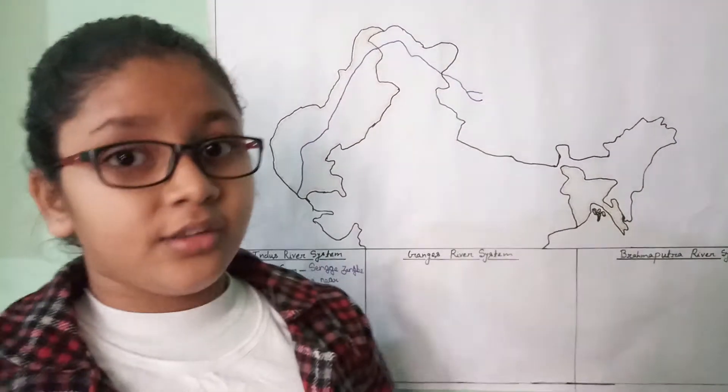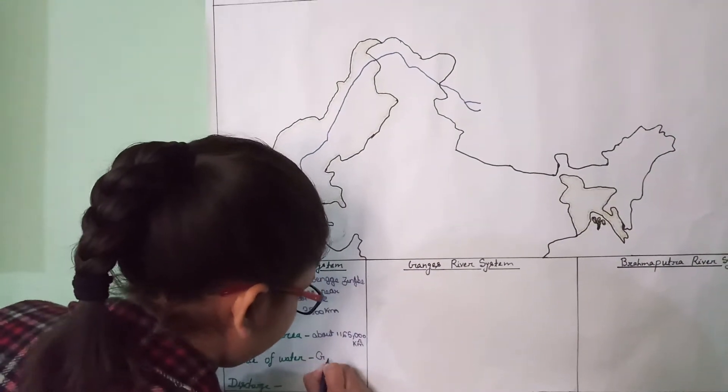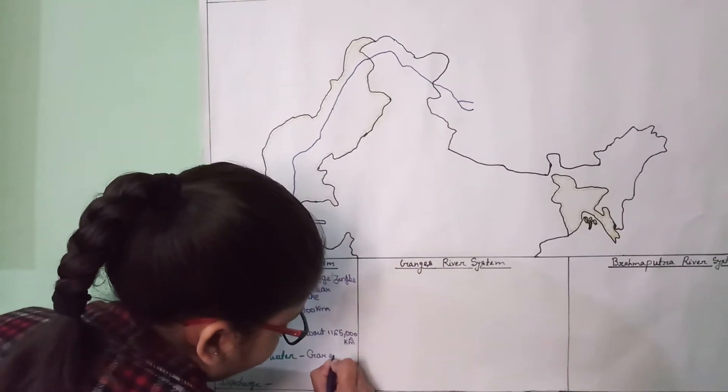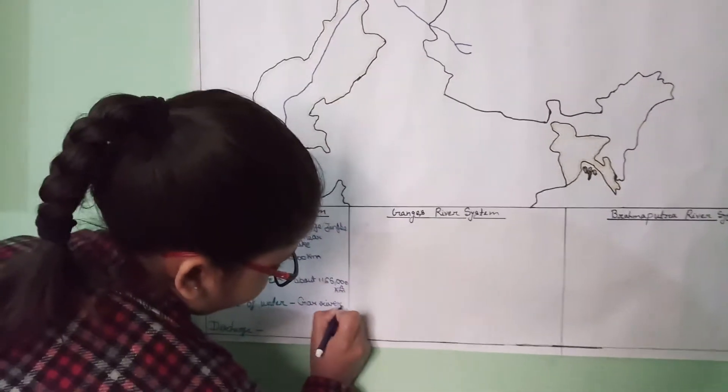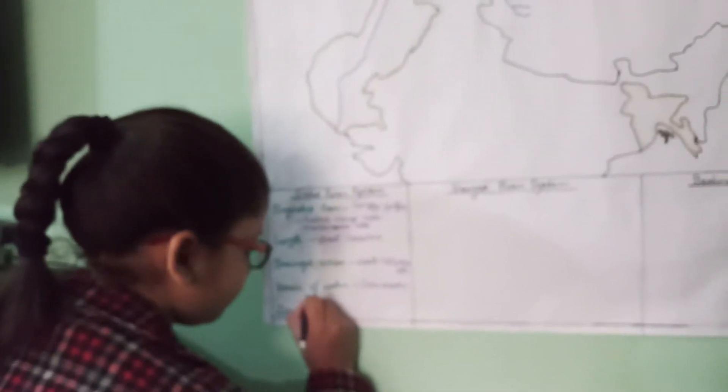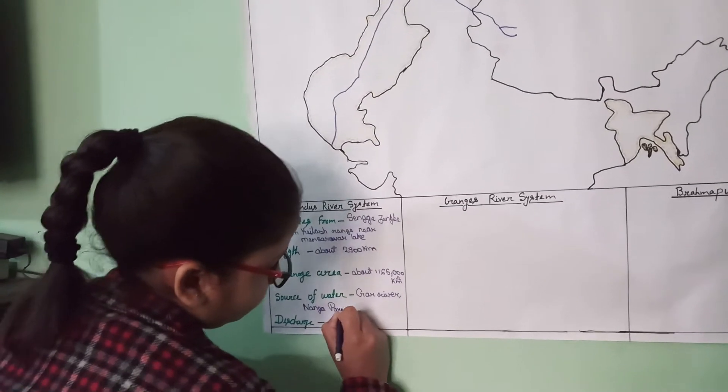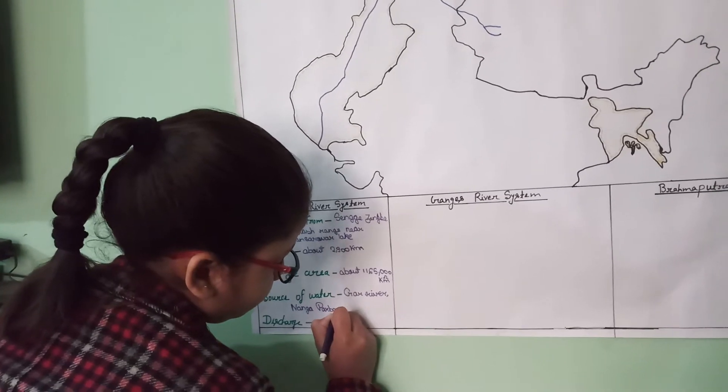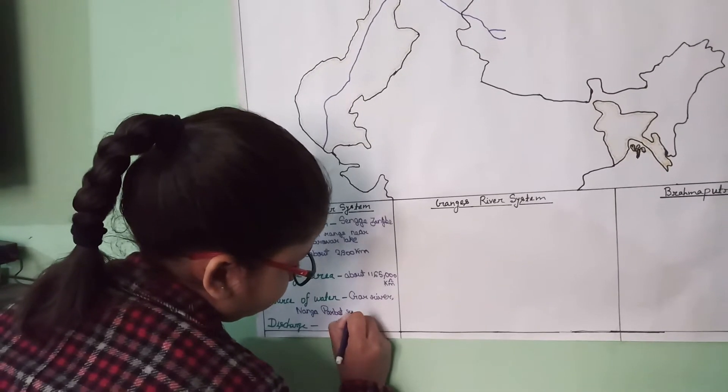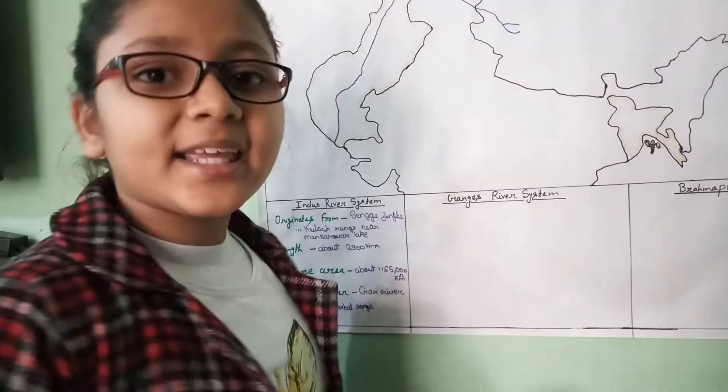So now the source of water of this river is glacier and Kailash Range.